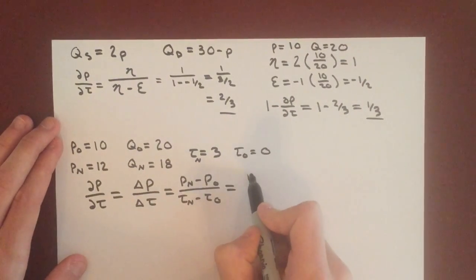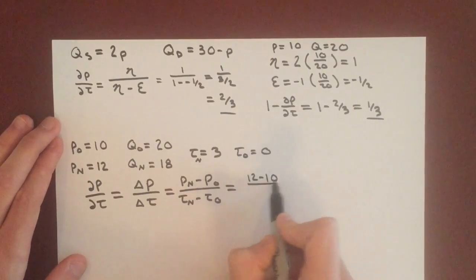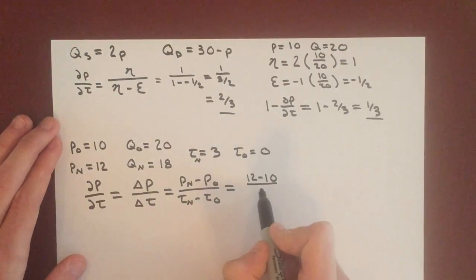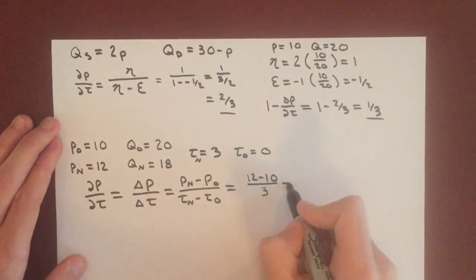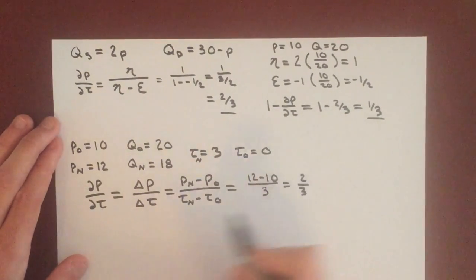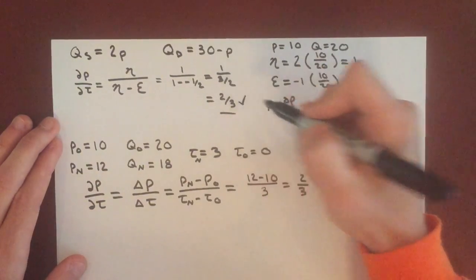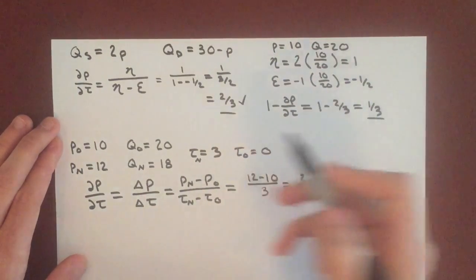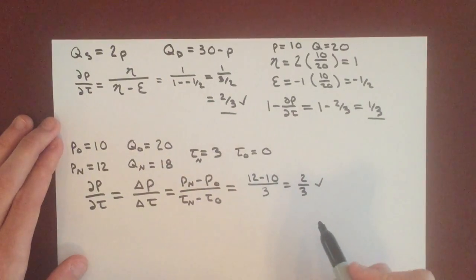We get price new, 12 minus 10, over tax new, 3 minus 0 is just 3. We get 2 over 3 for the incidence on consumers, which checks out exactly with what we got before we institute the tax.